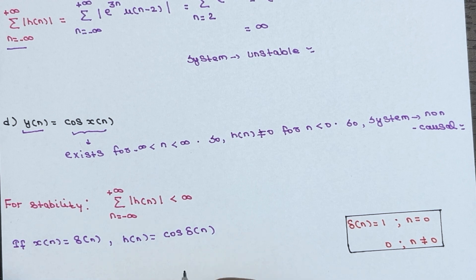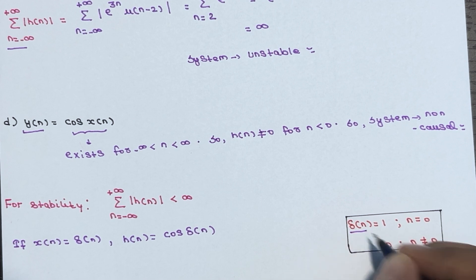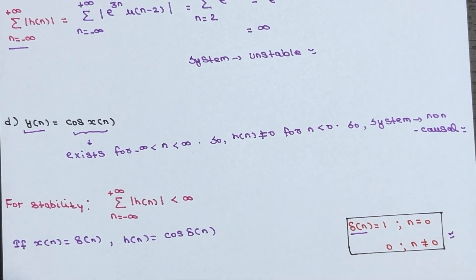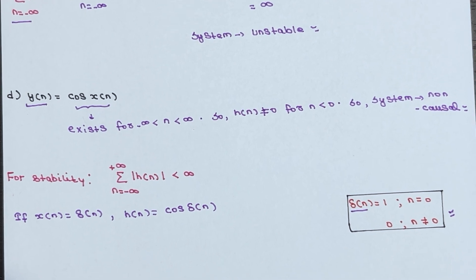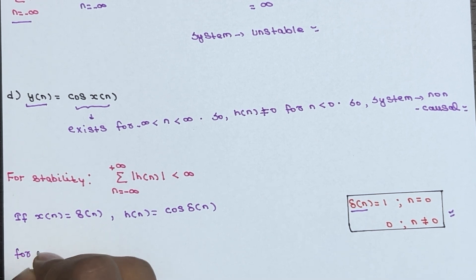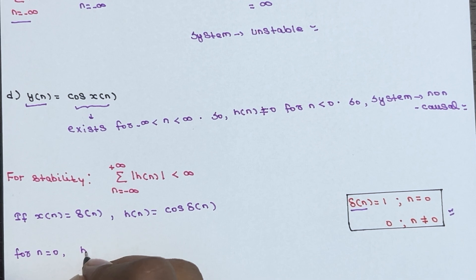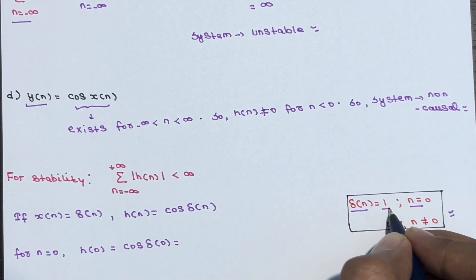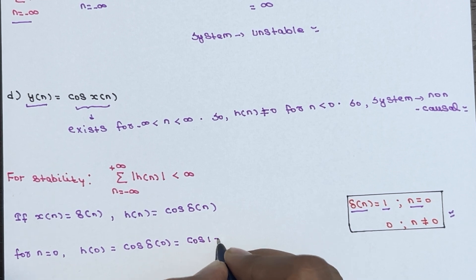Recall that δ(n) = 1 when n = 0, and δ(n) = 0 when n ≠ 0. So h(n) = cos(δ(n)). For n = 0: h(0) = cos(δ(0)) = cos(1) ≈ 0.54.